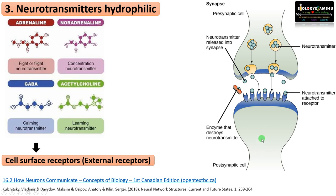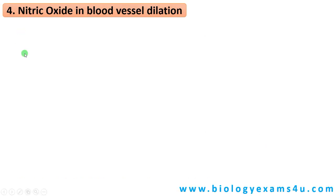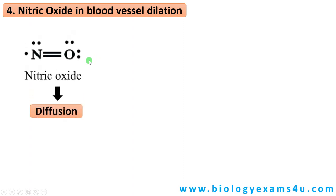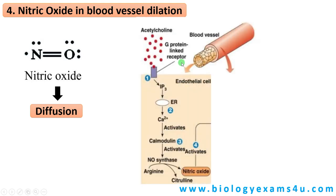So neurotransmitters have cell surface receptors or receptors on the plasma membrane. The fourth type is nitric oxide, which is involved in blood vessel dilation. These are gaseous ligands that can easily diffuse through the plasma membrane. Another example is carbon monoxide. Let us see the signaling of nitric oxide.